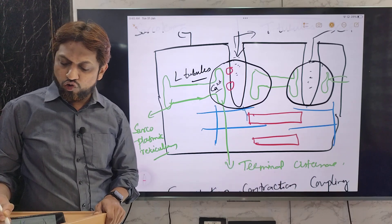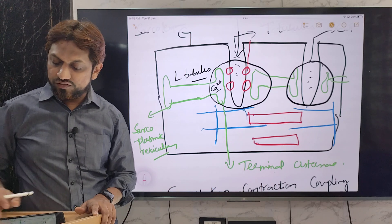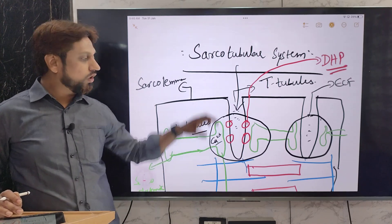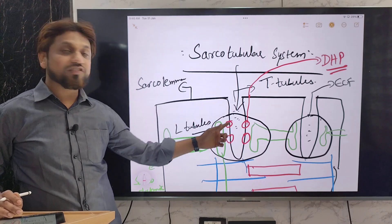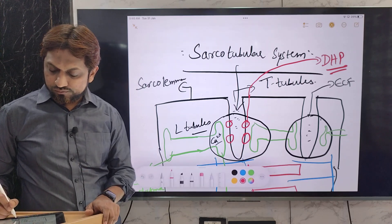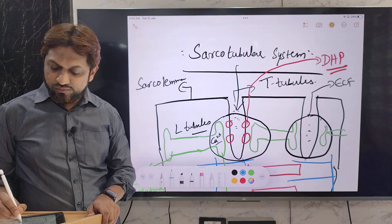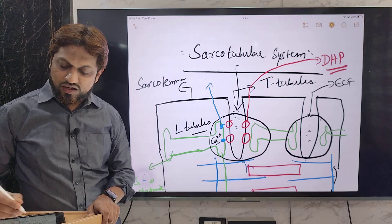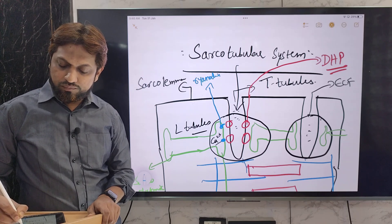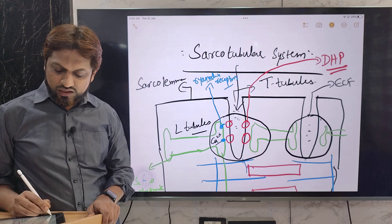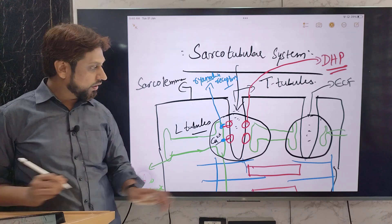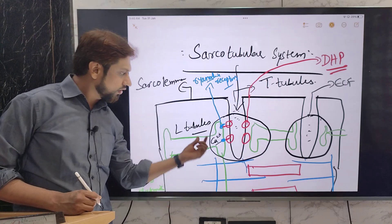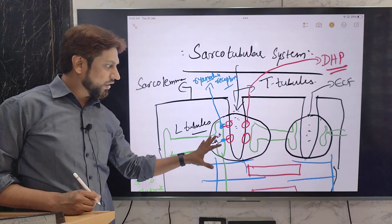How exactly is calcium released from the sarcoplasmic reticulum? On the T-tubule there are voltage-sensitive receptors known as DHP receptors, or dihydropyridine receptors. They are activated only when there is a change in membrane potential or when an action potential arrives. On the sarcoplasmic reticulum membrane there are calcium channels known as ryanodine receptors. These ryanodine receptors are mechanically connected to the dihydropyridine receptors. So DHP receptors are voltage-sensitive receptors on the T-tubules, and ryanodine receptors are calcium channels on the sarcoplasmic reticulum, and both are mechanically interlinked.